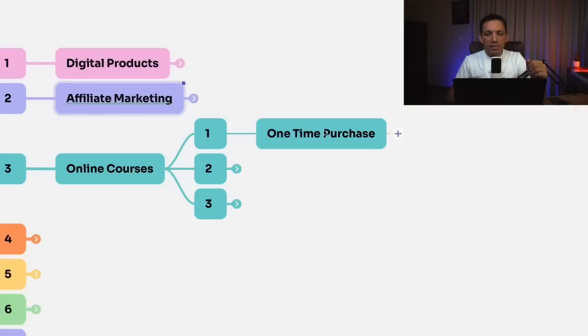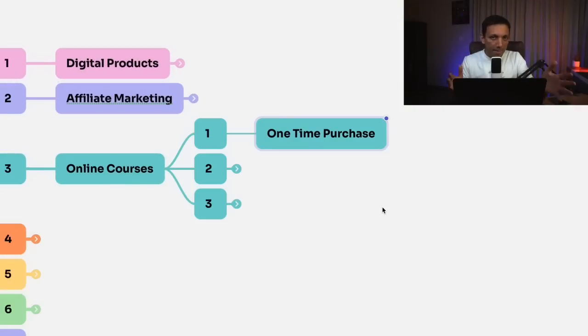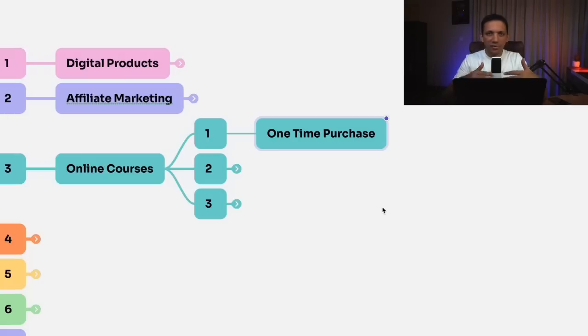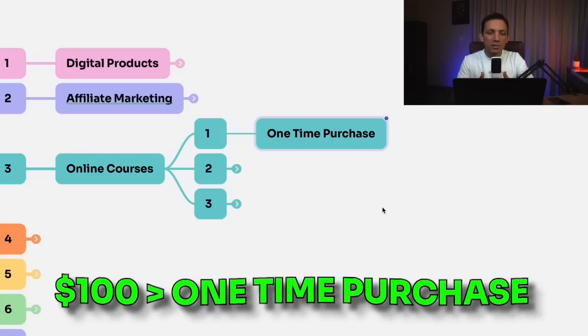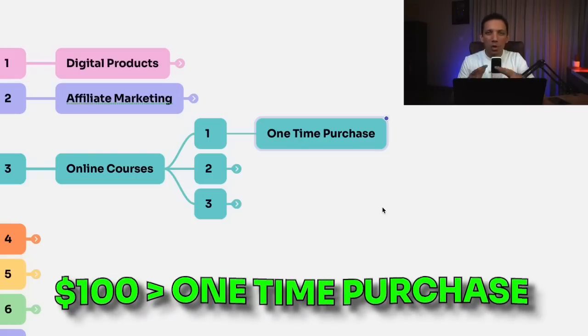The third way to make a passive income is through online courses. The first part is creating one-time purchase courses — people buy it once and consume it. Maybe it's a short course or a mini course: 500 rupees, 1,000 rupees, $10, $20, $50, $100. Anything under $100 is what I would call a low-ticket, one-time purchase-based product.